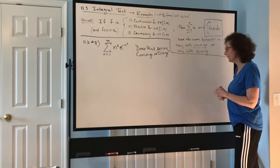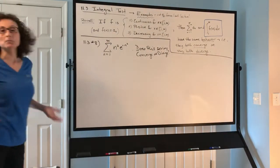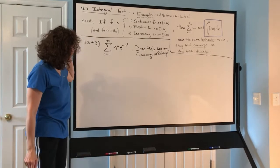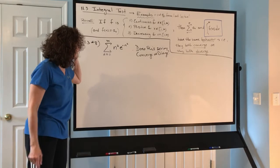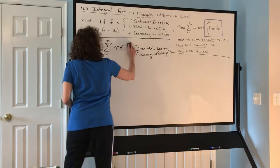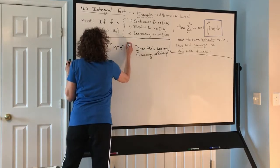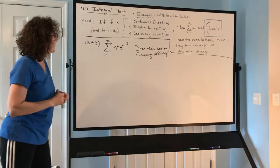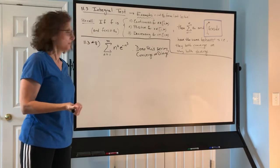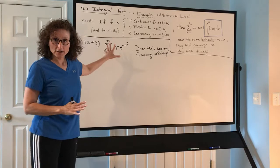Here's example 11.3 number 8, one of your homework problems. We have the sum from n equals 1 to infinity of n squared e to the negative n cubed. The question is: does this series converge or diverge?